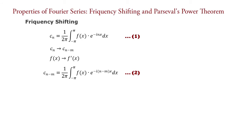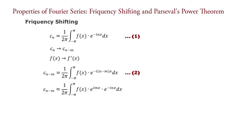Comparing equation 2 with equation 1, it is found that in equation 1, n is replaced by n minus m. Simplifying this equation, we have C_{n minus m} equals 1 upon 2π times the integral from minus π to π of f(x) times e raised to i·m·x times e raised to minus i·n·x dx — equation 3.